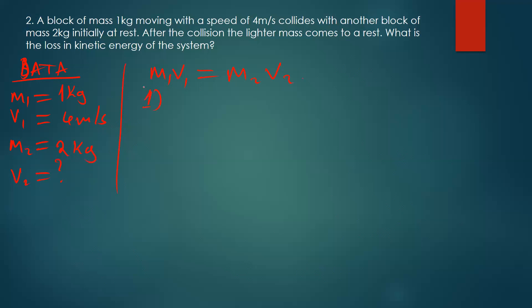We can plug in the values. The momentum before collision is m1 times v1, which is 1 times 4. After collision, we have 2 times v2. So 4 equals 2v2. When you divide by 2, v2 becomes 2 meters per second.